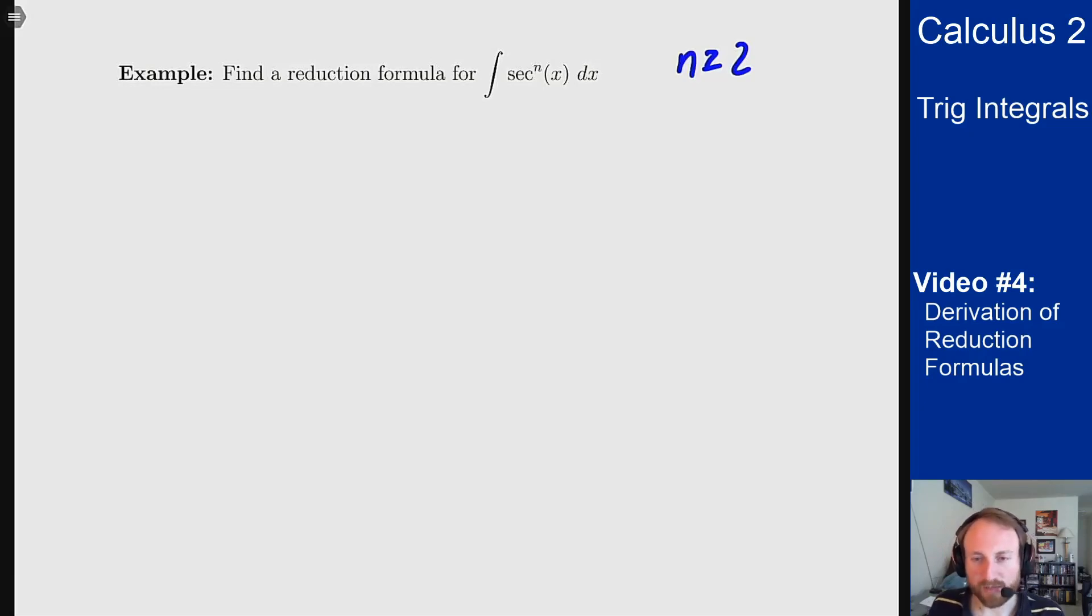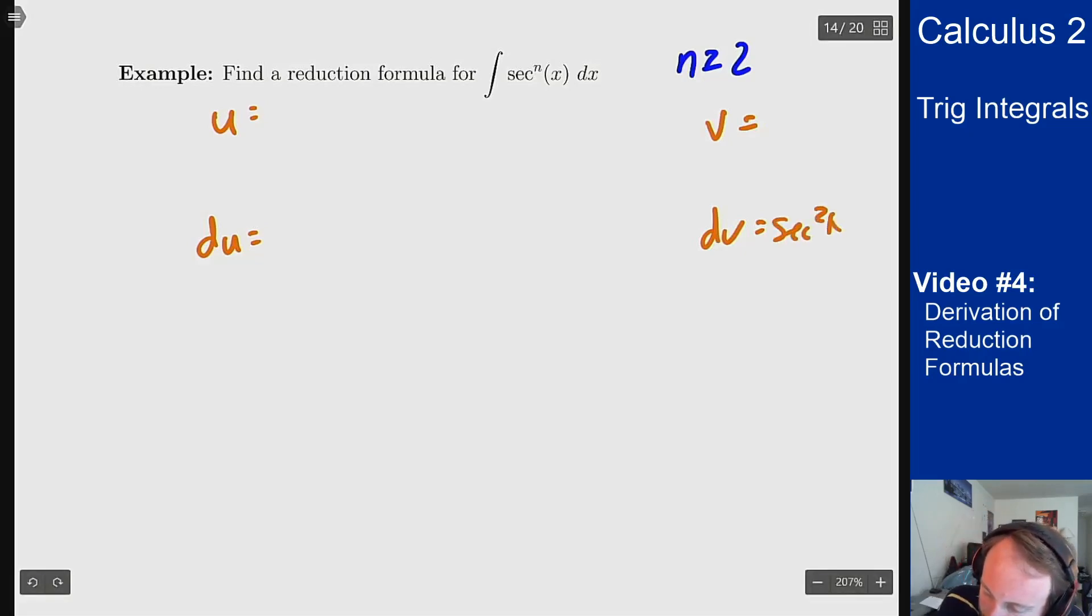Well we again want to use integration by parts but the question becomes what is our dv? And the way we want to think about it is what power of secant is really easy to integrate. And what's really easy to integrate is secant squared because we know that integrates to tangent. So let's pick secant squared to be our dv so our v is tangent.